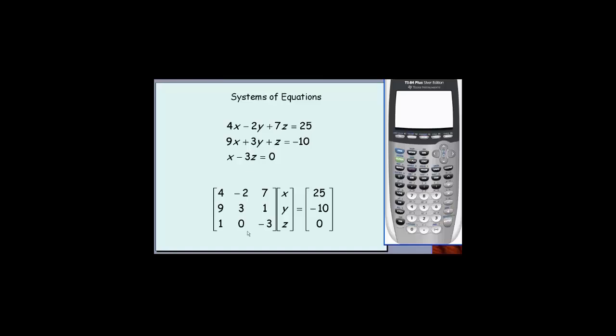Notice the coefficients are the rows of matrix A. Four, negative two, and seven are coming right from the first equation. Notice that last row, the coefficient of y is zero. There is no y in this equation. These numbers in our B matrix are coming from our constants: 25, negative 10, and zero.